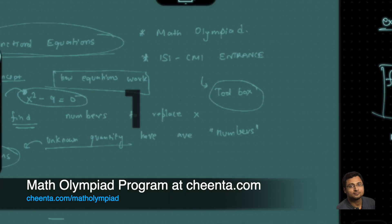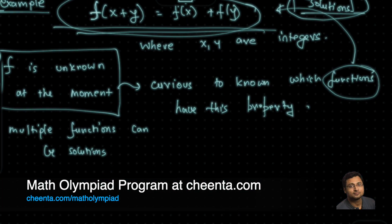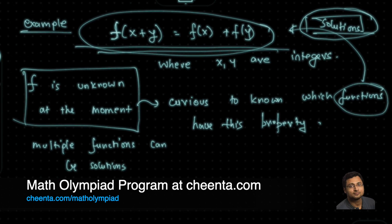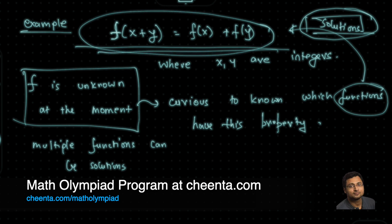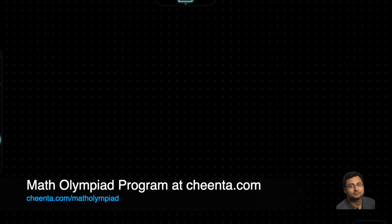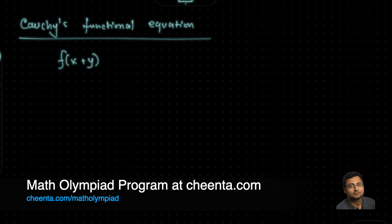Just like in the normal equation x² - 9 = 0, both 3 and negative 3 would be solutions — similarly here, multiple functions might satisfy this condition. This particular example is also known as Cauchy's Functional Equation. Let's try to solve it. f(x + y) = f(x) + f(y).